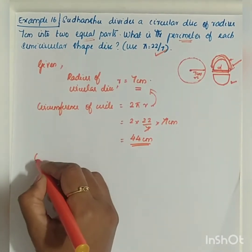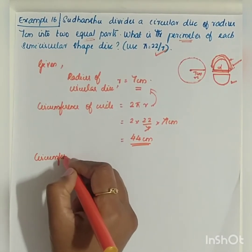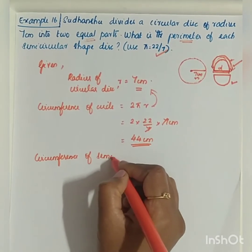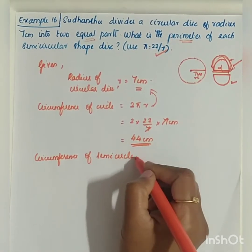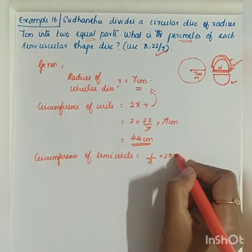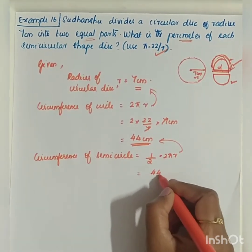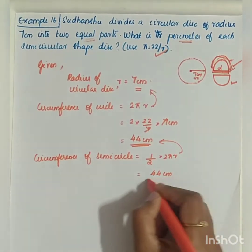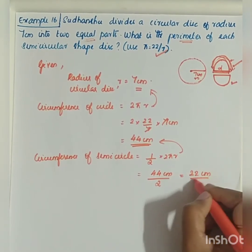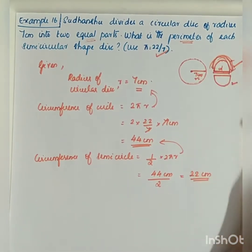If we know the circumference of the circle, it is easy to find out the circumference of the semicircle — just divide it by 2. The circumference of the semicircle is equal to 1/2 into 2πr. We already found that 2πr is 44 cm, so 44 divided by 2 gives us 22 cm. We have got the first data — the circumference of the semicircle is 22 cm.